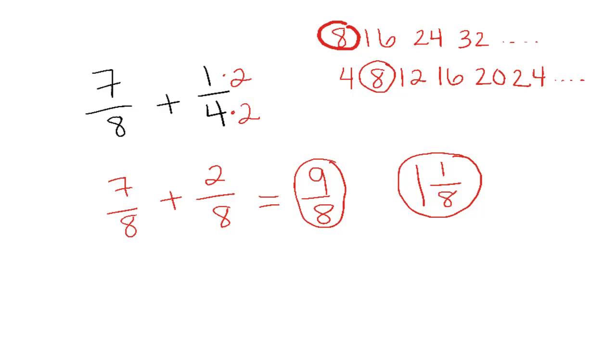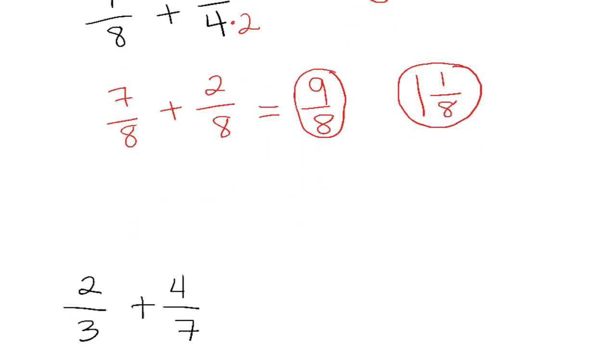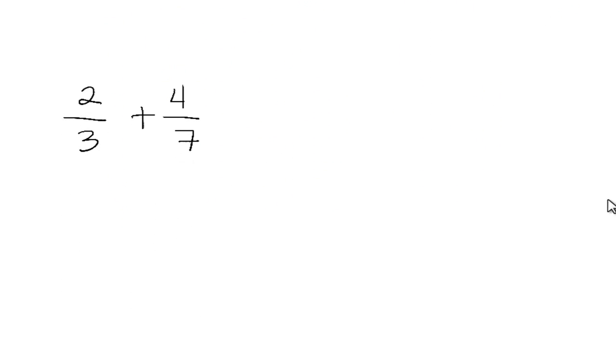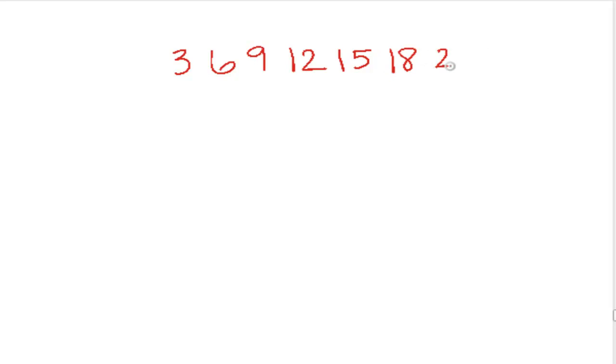The next example, let's do one where we have to change both denominators. Okay again, we need a common denominator between 3 and 7. So multiples of 3 would be 3, 6, 9, 12, 15, 18, 21, 24, etc.